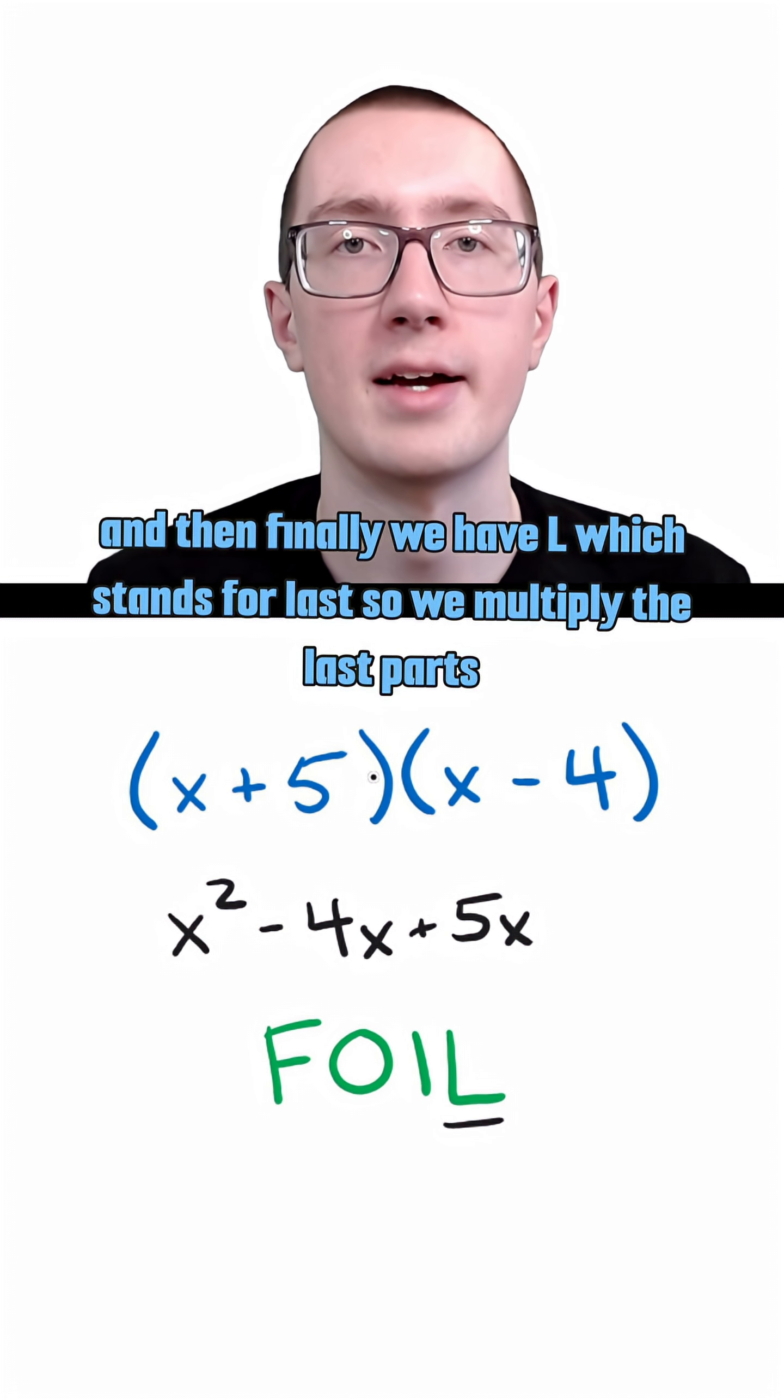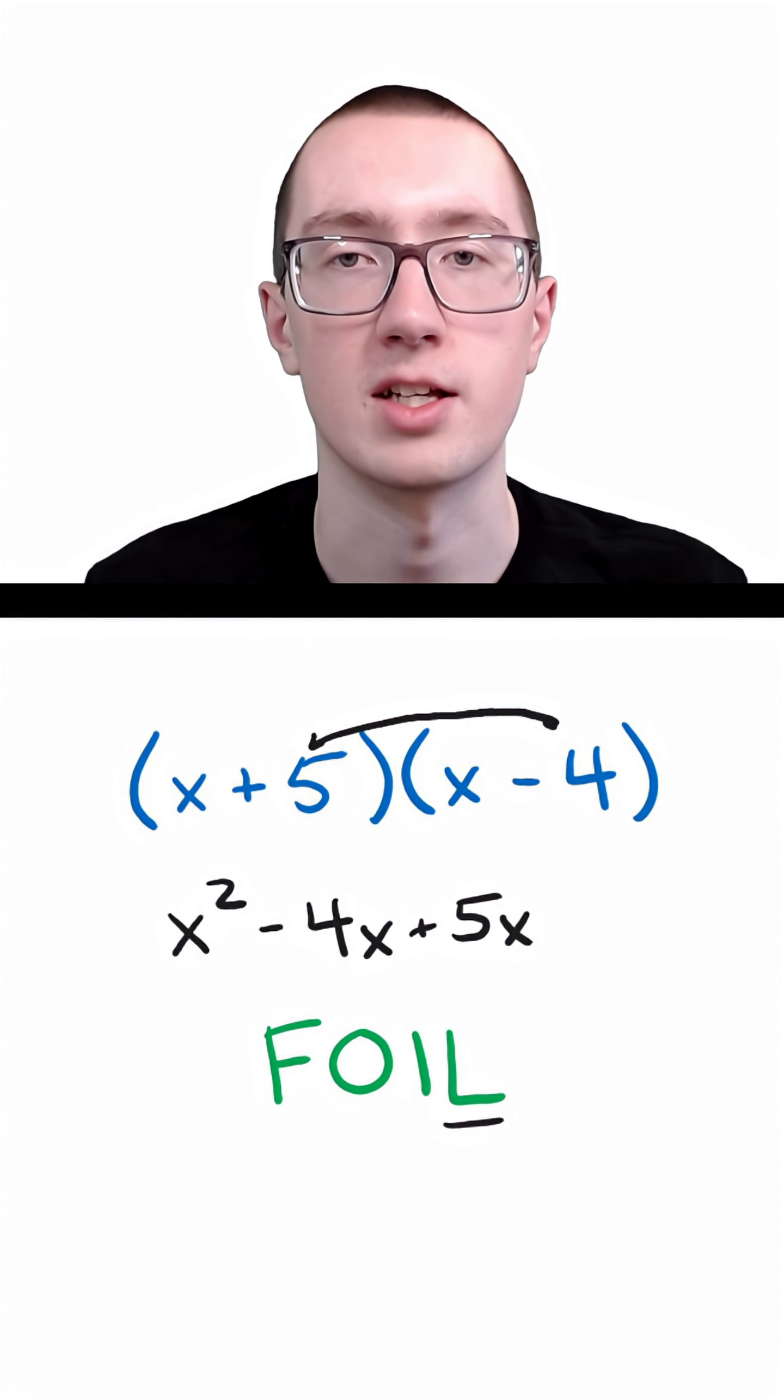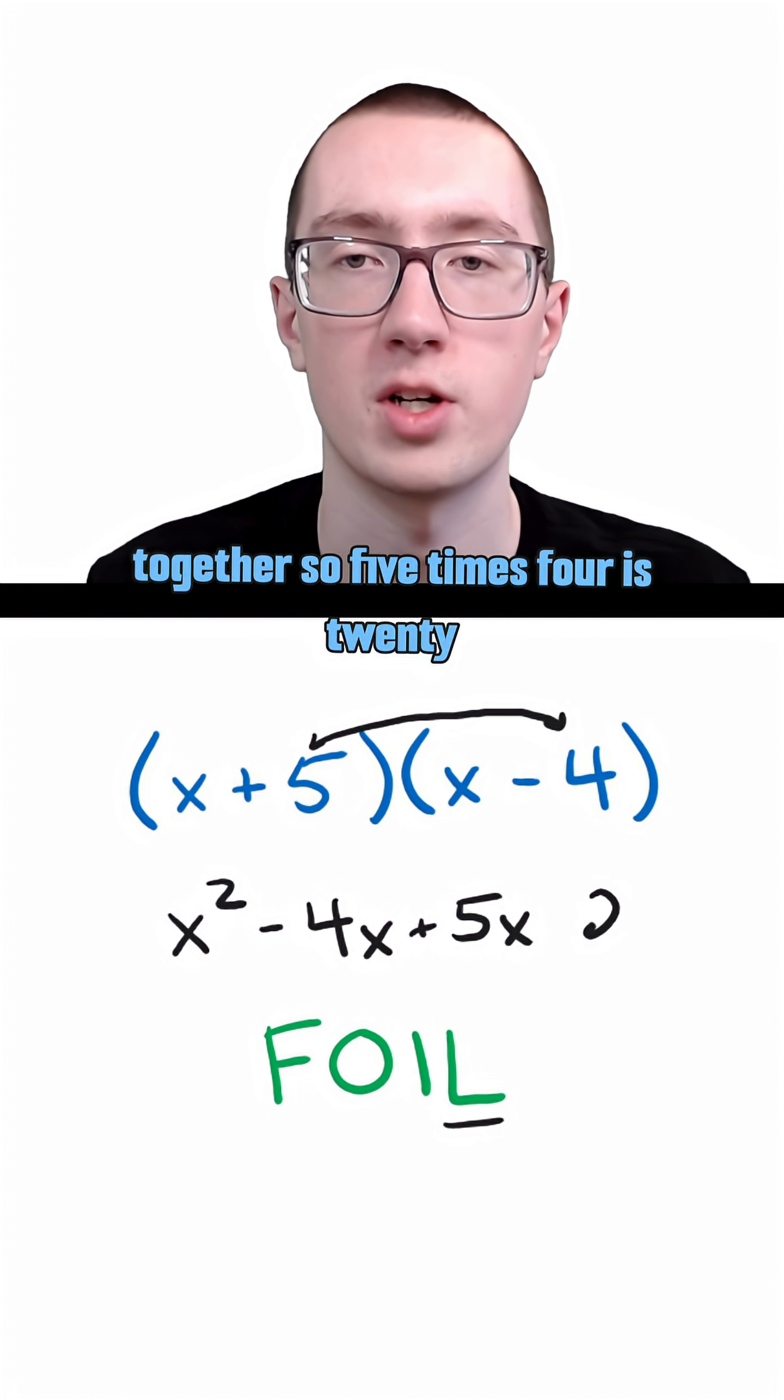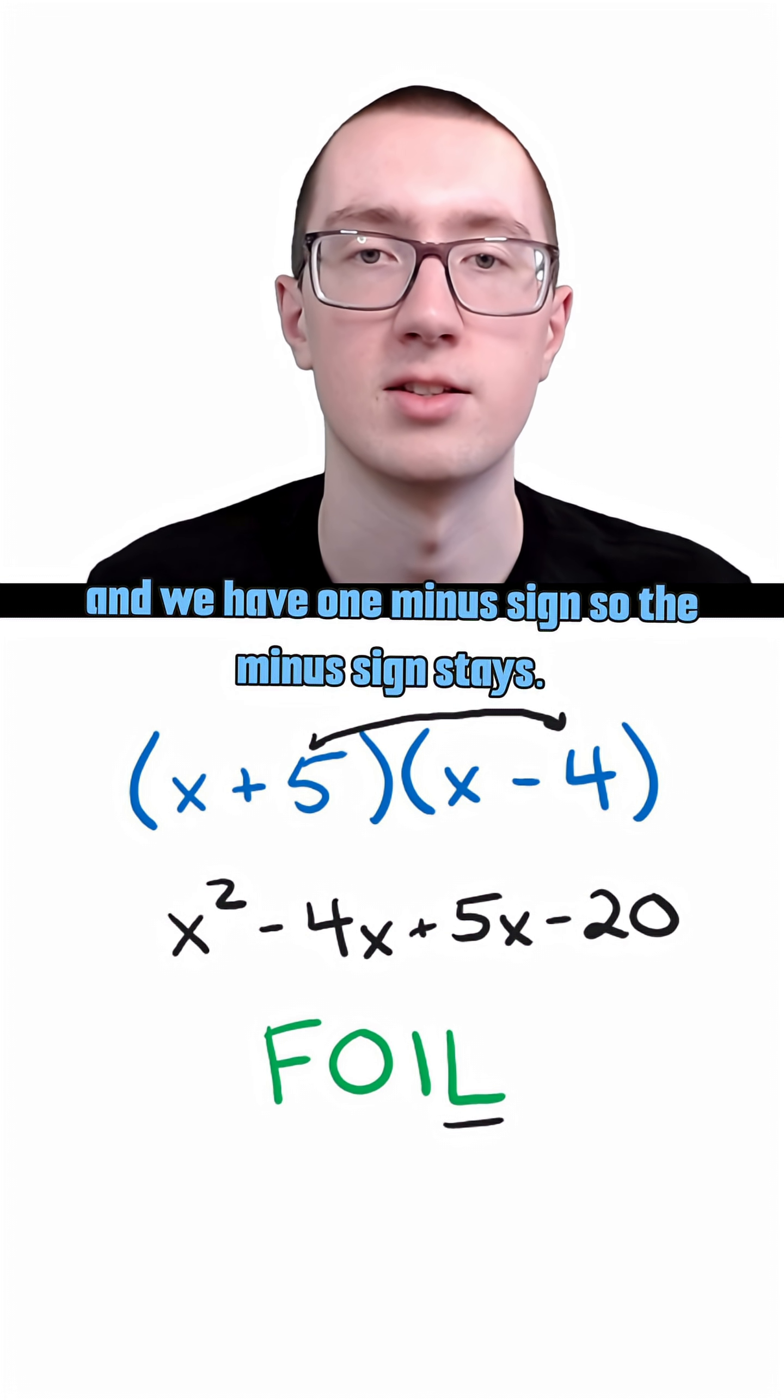And then finally, we have L, which stands for last. So we multiply the last parts together. So five times negative four is negative twenty. And we have one minus sign, so the minus sign stays.